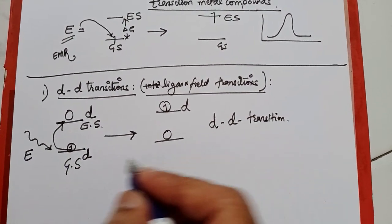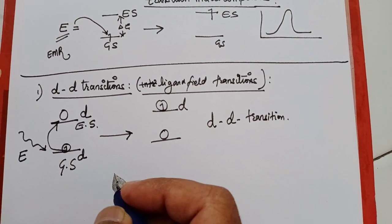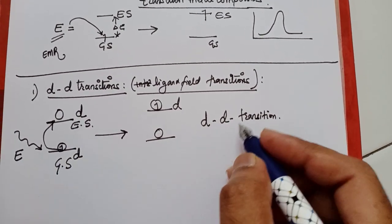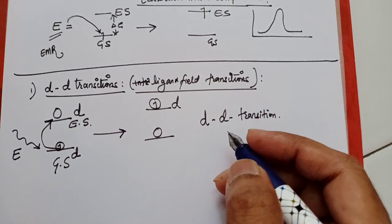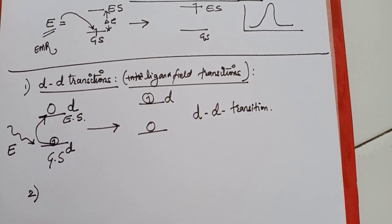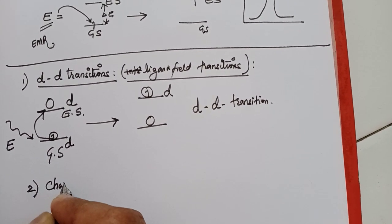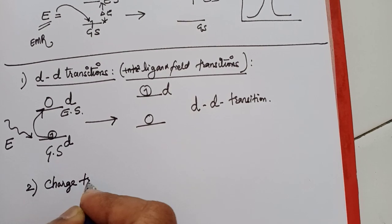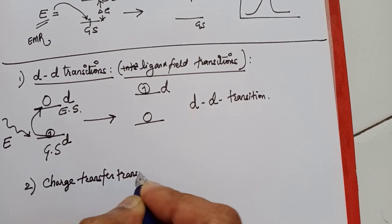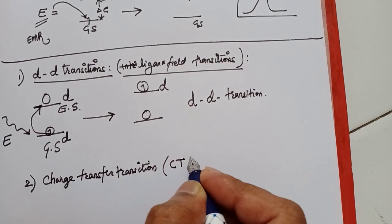These d-d transitions are mainly responsible for the spectral properties of transition metal compounds — that is, they usually determine the color of the compound. Another type of transition that we see is the charge transfer transition, abbreviated as CT transition.